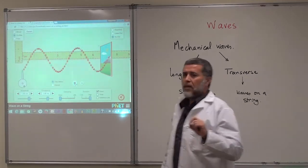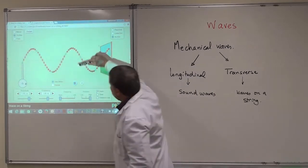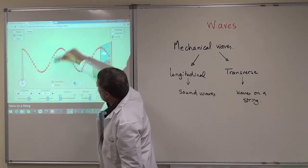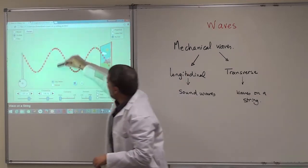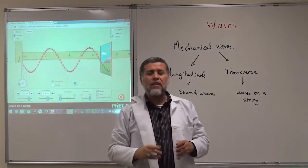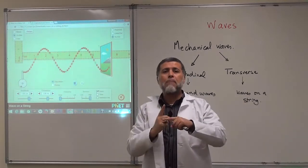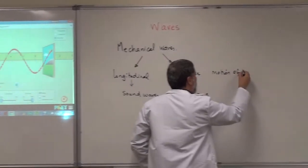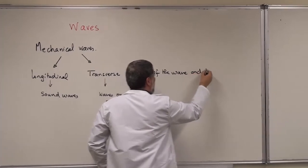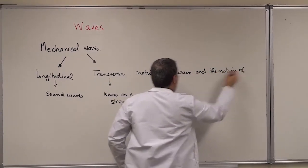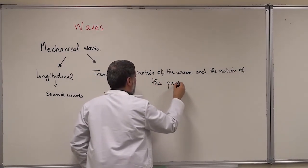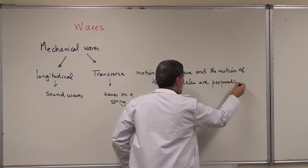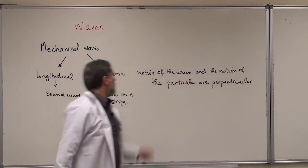The other motion we have to consider is the motion of the particles of the medium. As you can see, the green point is moving up and down. All these points making the medium are moving up and down, while the wave is moving to the right. So the angle between the two motions is 90°— they are perpendicular. When the motion of the wave and the motion of the particles are perpendicular, we call this a transverse wave.